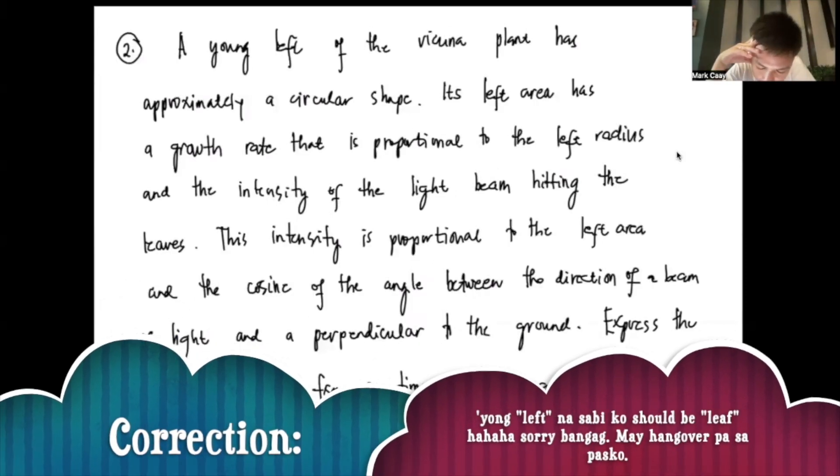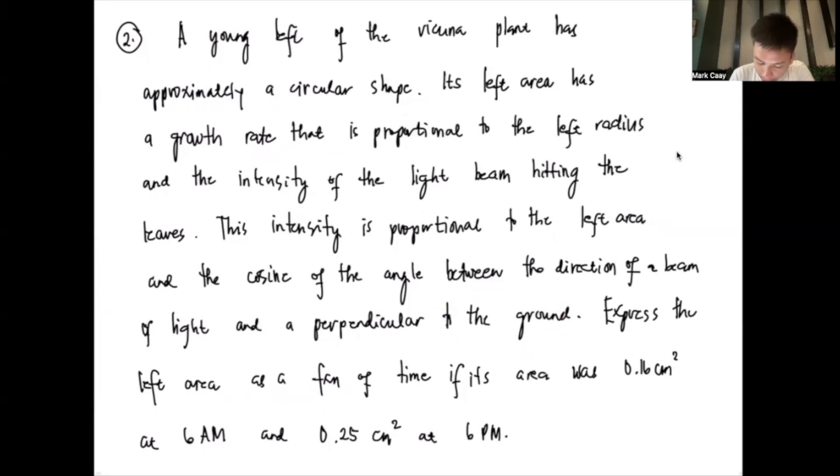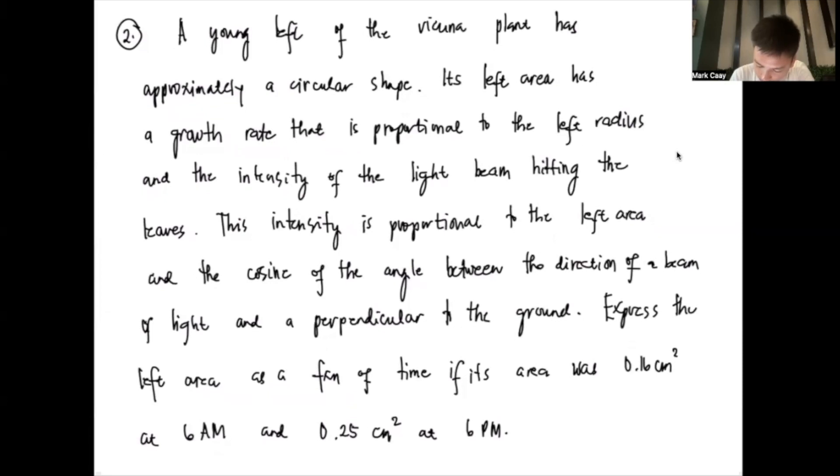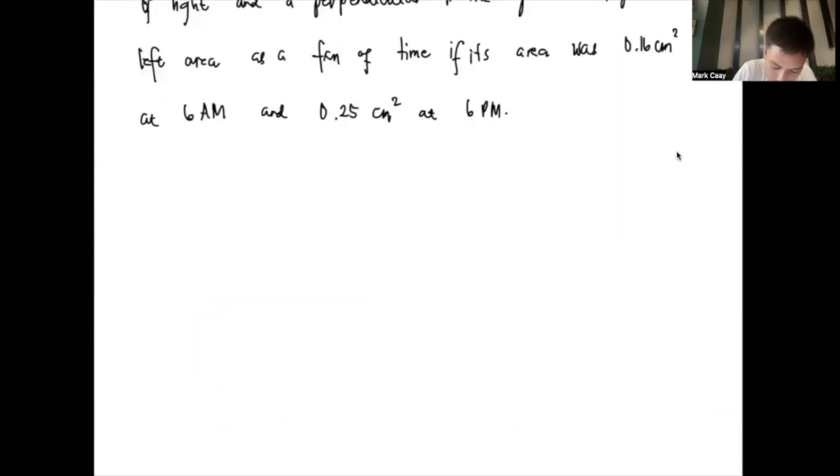Okay. Next is a leaf of the Buna plant has approximately a circular shape. So, its leaf area has a growth rate that is proportional to the leaf radius and intensity of the light beam hitting the leaves. This intensity is proportional to the leaf area and the cosine of the angle between the direction of a beam of light and perpendicular to the ground. So, this is a line perpendicular to the ground. Express the leaf area as a function of time if its area was 0.16 cm squared at 6 a.m. and 0.25 cm squared at 6 p.m. So, let's assume that the sunrise will start at 6 a.m. and the sunset will be at 6 p.m.